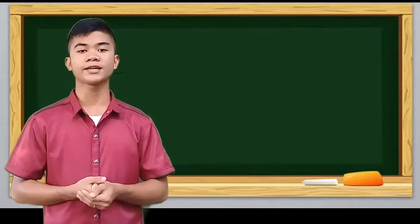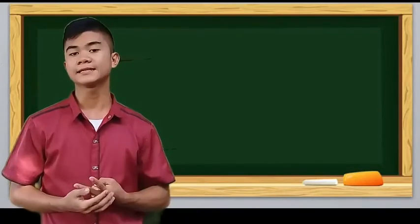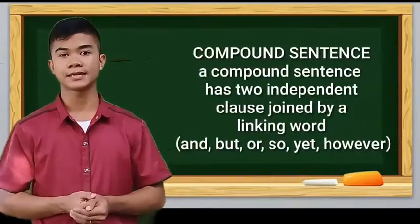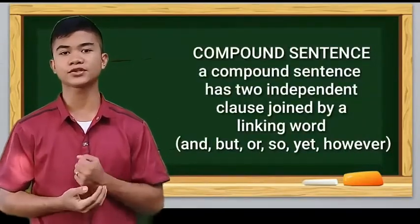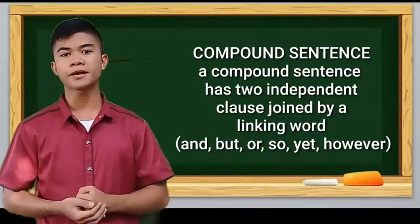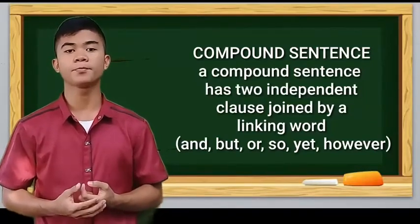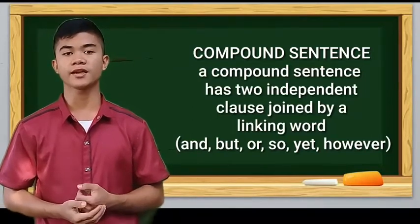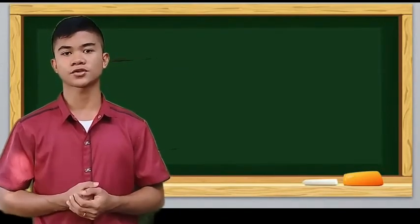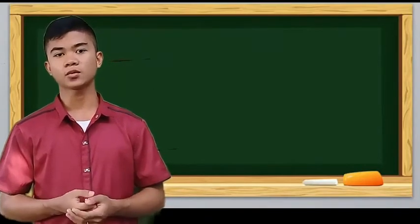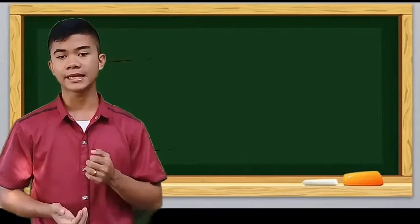The second form of sentence is the compound sentence. The compound sentence has two independent clauses joined by a linking word. The linking words are like and, but, or, so, yet, and however. Each independent clause could be a sentence by itself, but we connect them with a linking word.